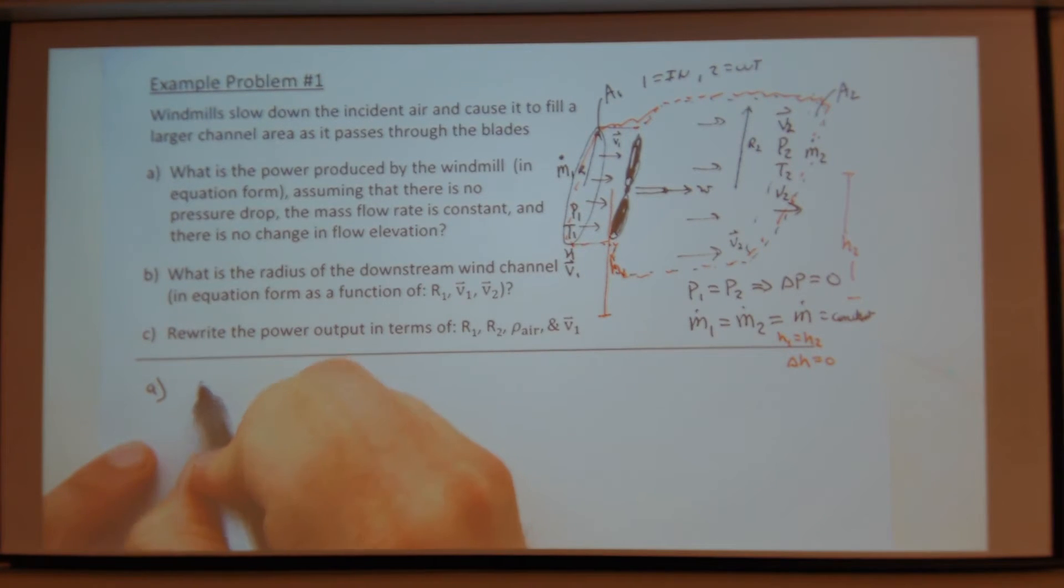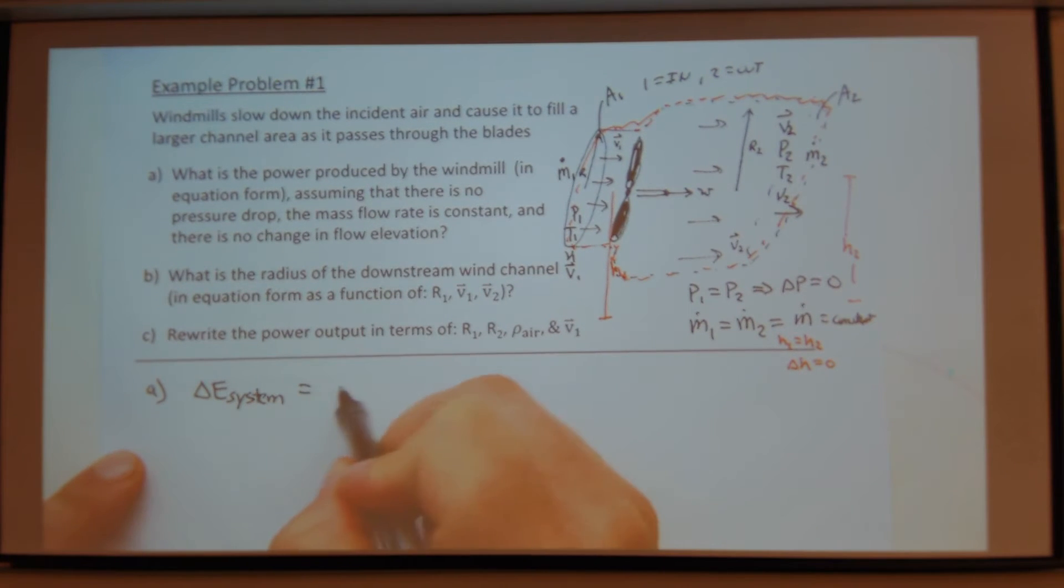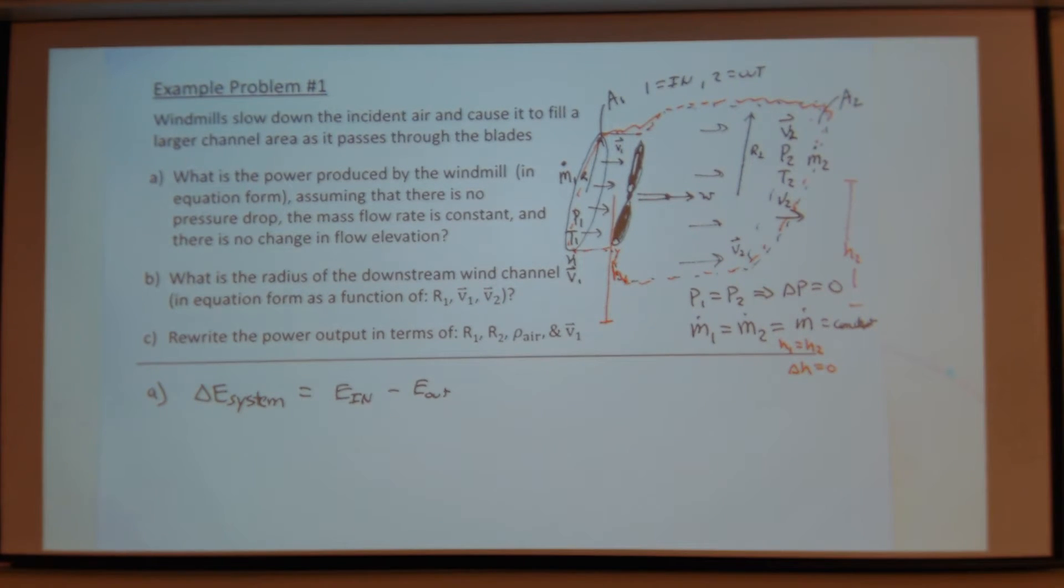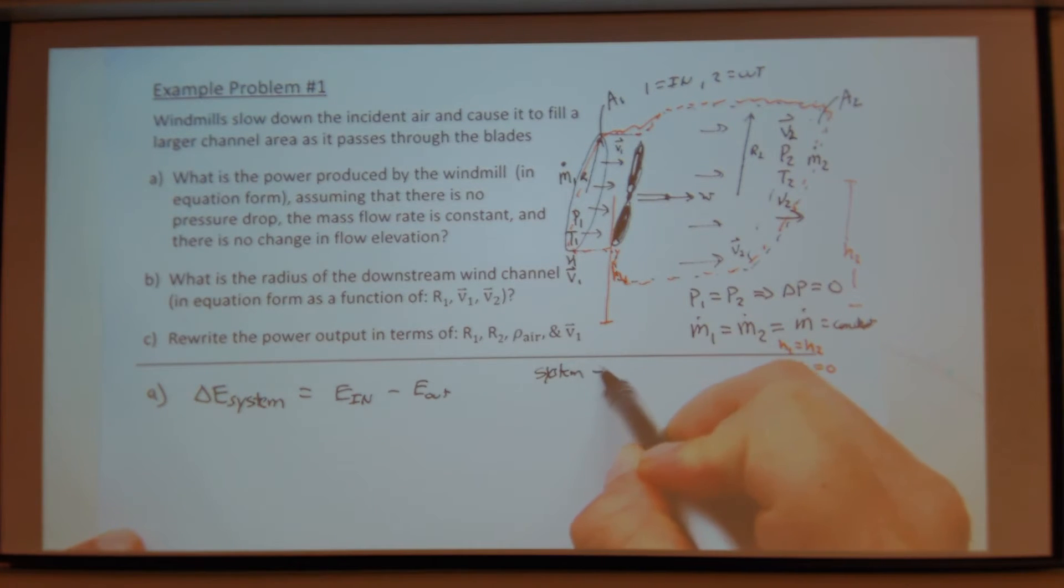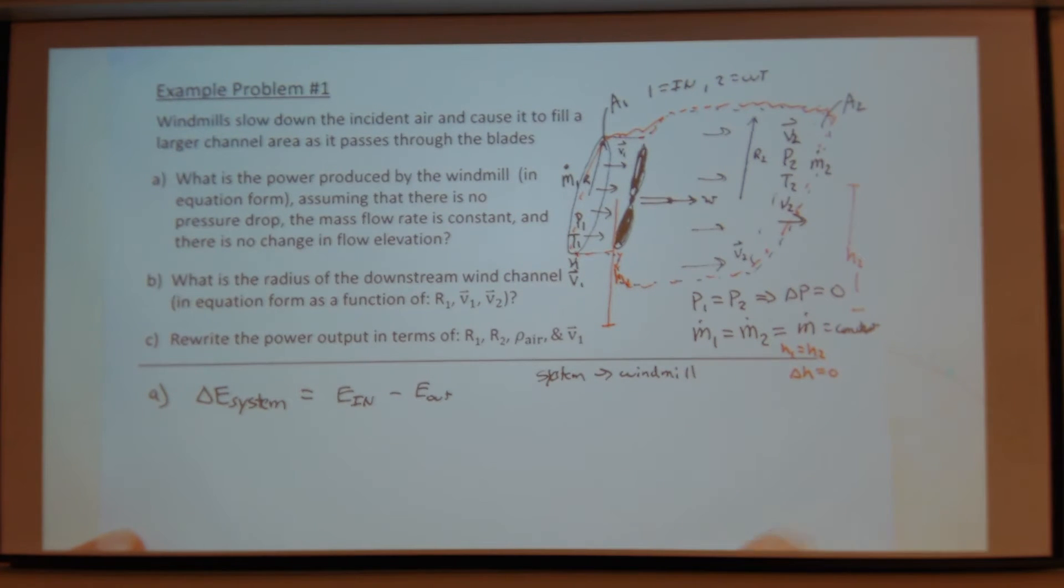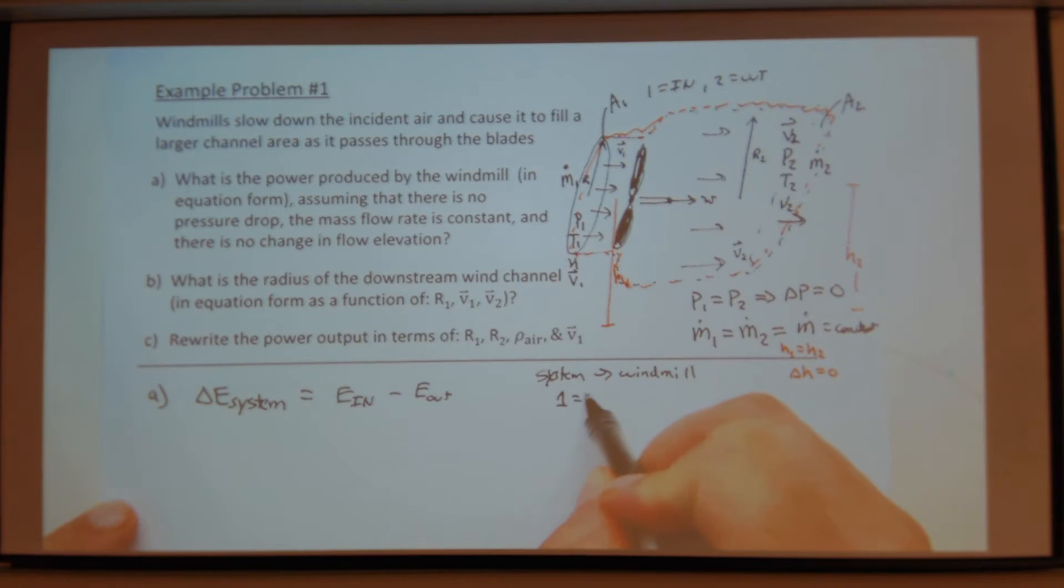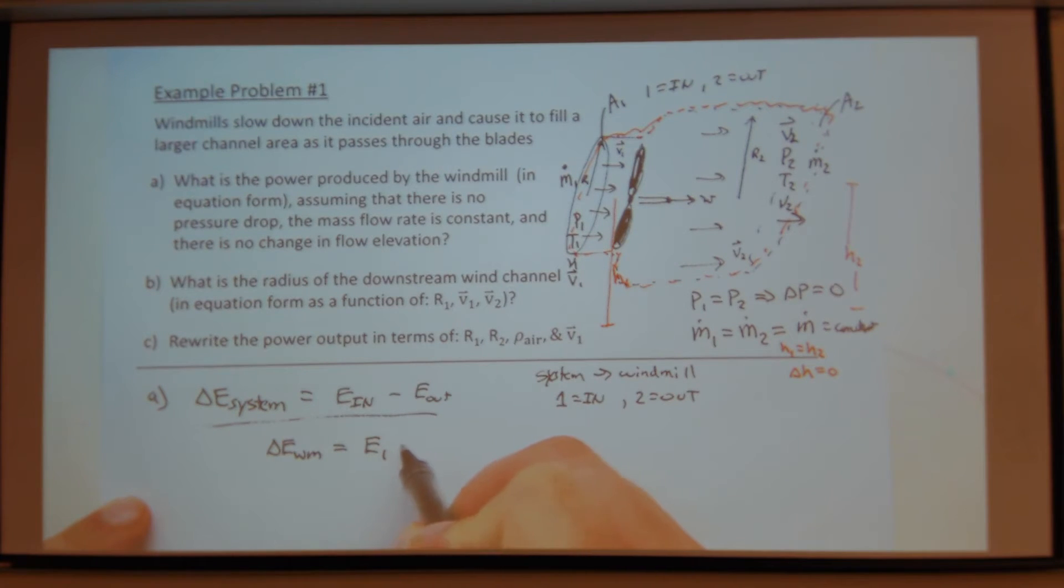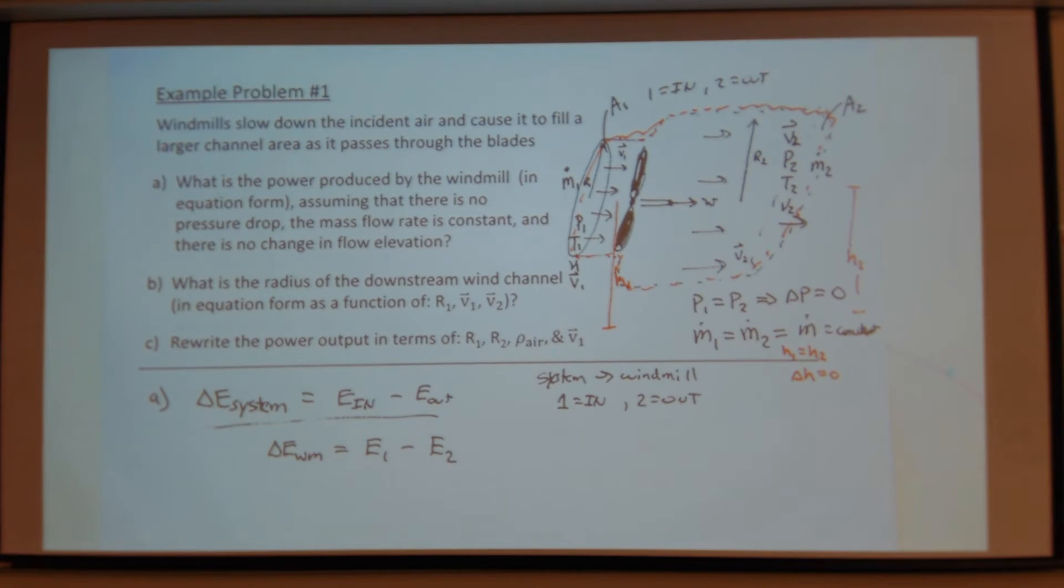Okay. So I'm going to write the first law in rate form, in energy balance form. So the energy in my system equals the energy in minus the energy out. My system is the windmill. And I've already wrote this, but let's say one equals in and two equals out. So let's rewrite this. Delta E windmill equals energy one minus energy two. And let's put it in rate form by putting dots like this.